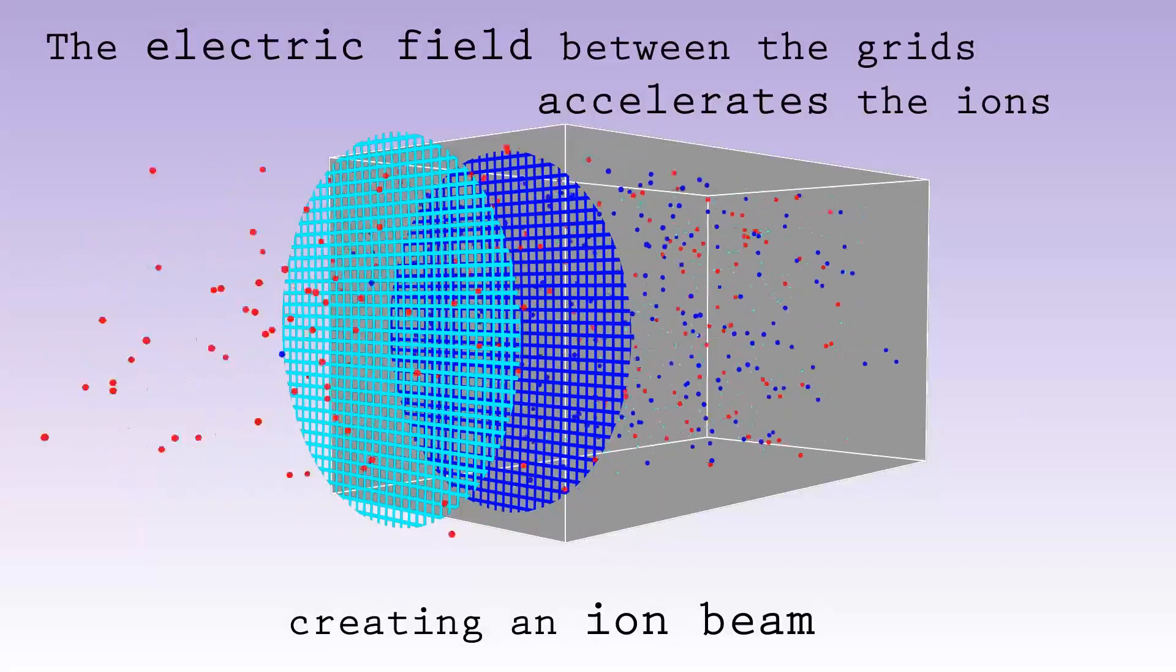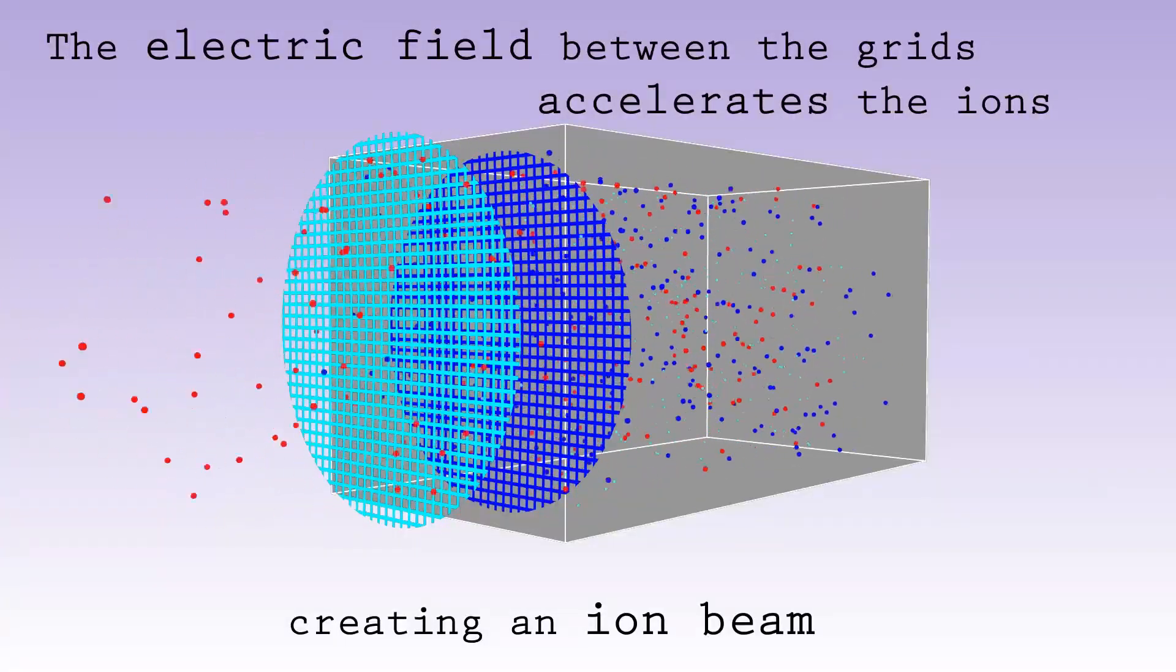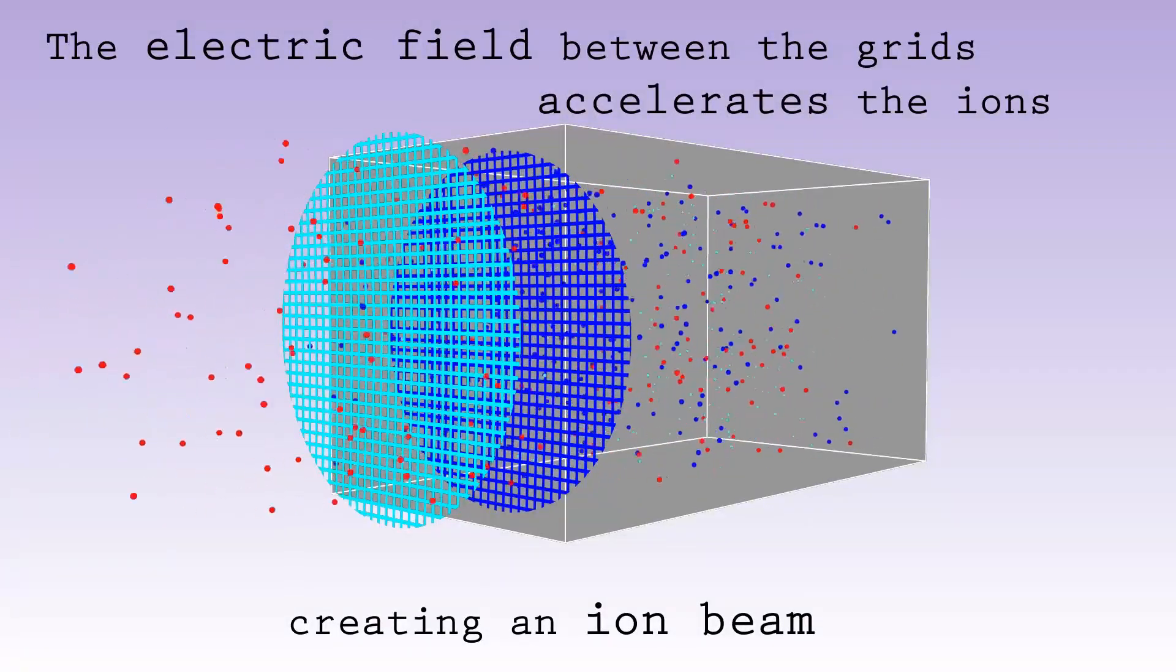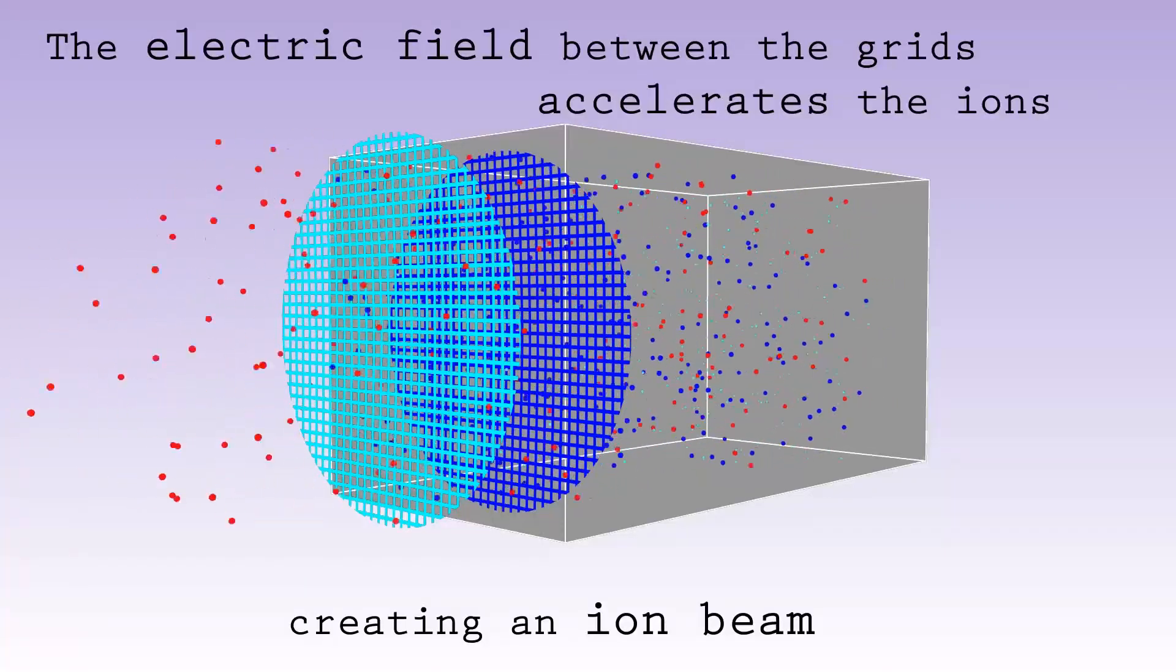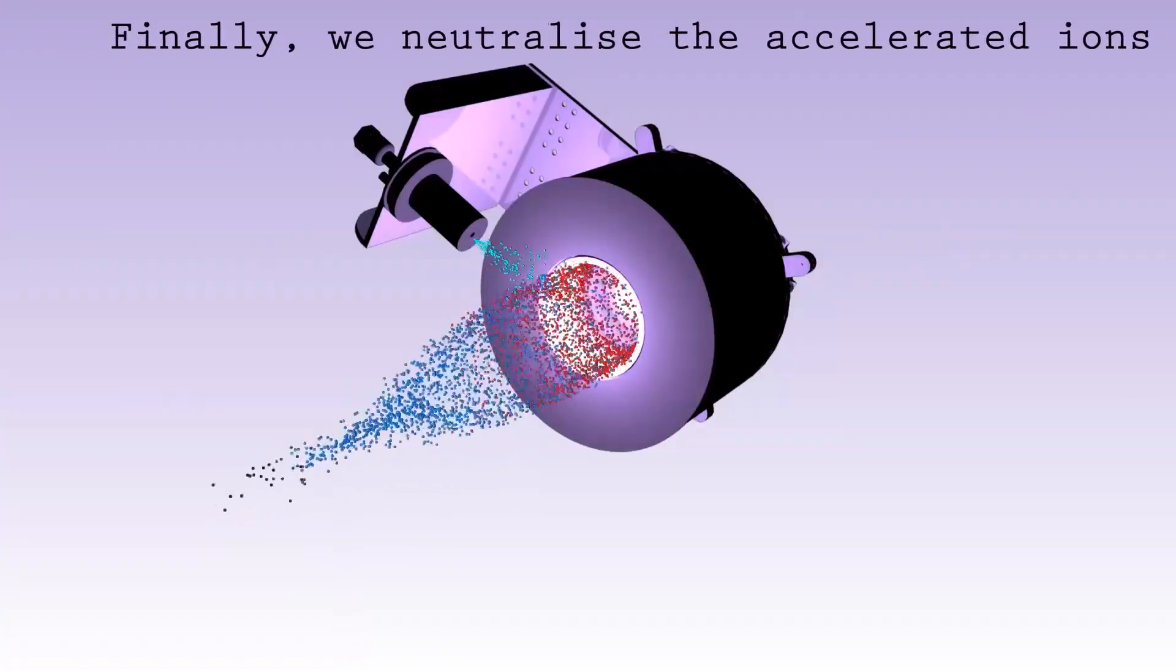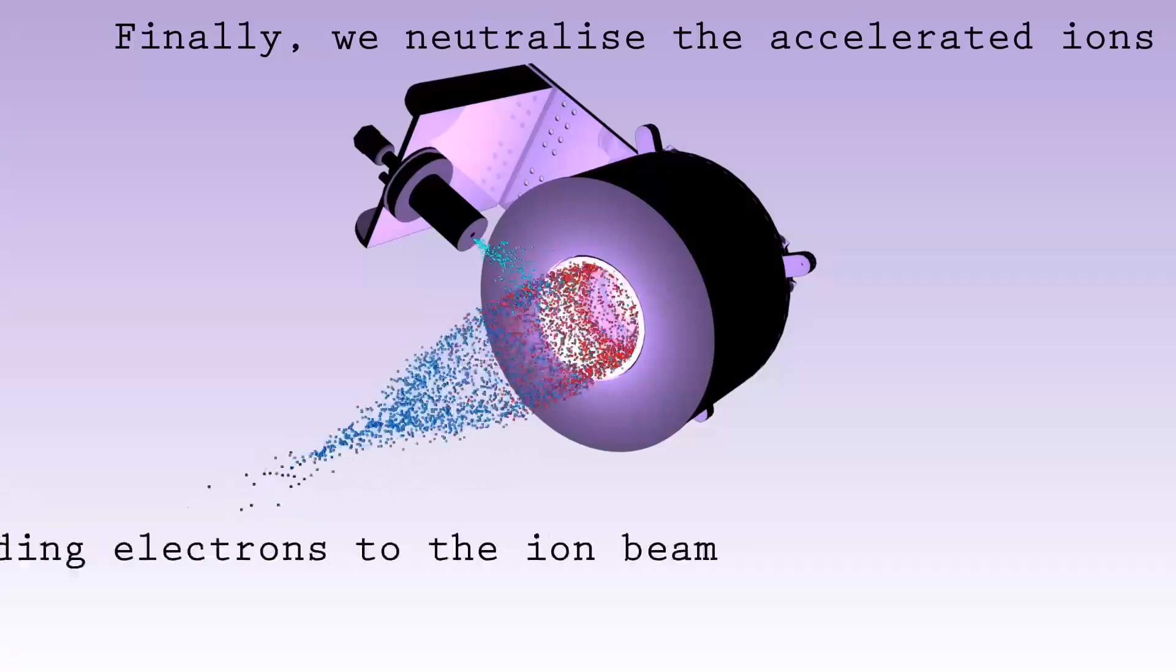To make our plasma rocket complete, we just need to make the ions in our beam neutral again. We do this by spraying electrons at the ion beam, causing them to recombine and become neutral atoms.